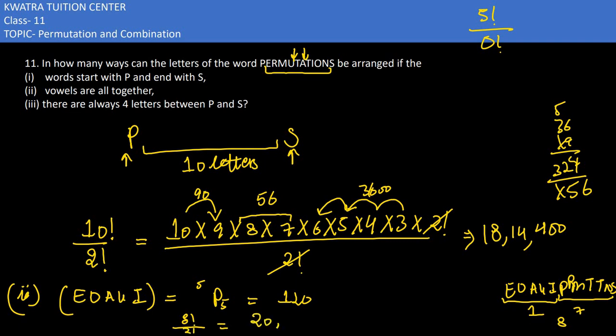And the total would be 20,160 times 120, which would give you 24,192,000. OK, so yes, this is the answer for the 2nd part. Now moving to the 3rd.